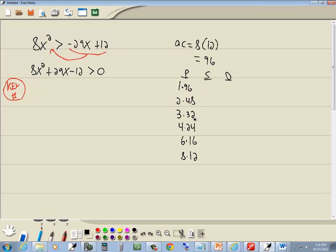The reason why I said we don't need any of those is because 32 minus 3 gives us 29 right here. But anyway, if I add them, 1 plus 96 is 97. 2 plus 48 is 50. 3 plus 32 is 35. 4 plus 24 is 28. 6 plus 16 is 22. 8 plus 12 is 20.